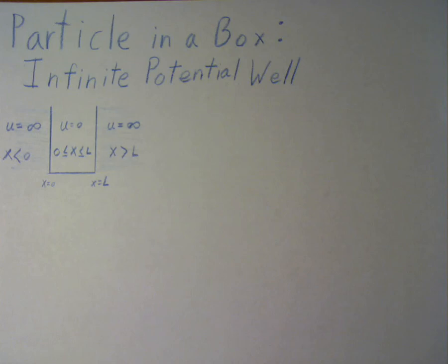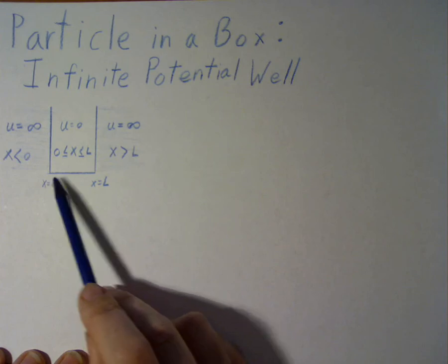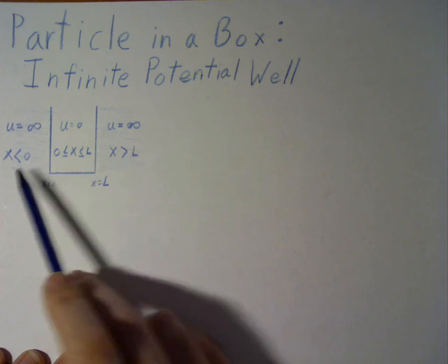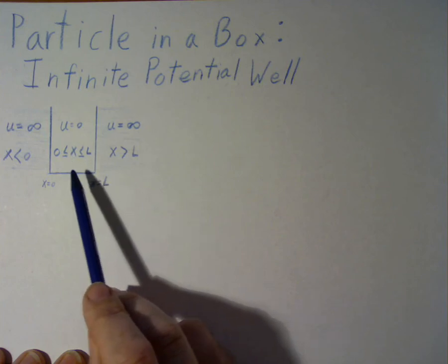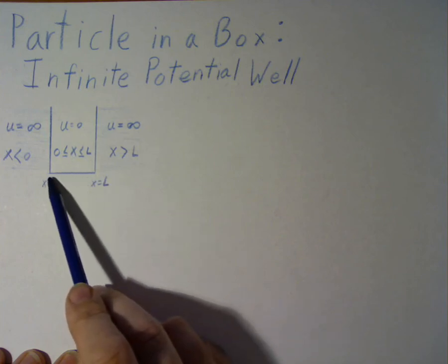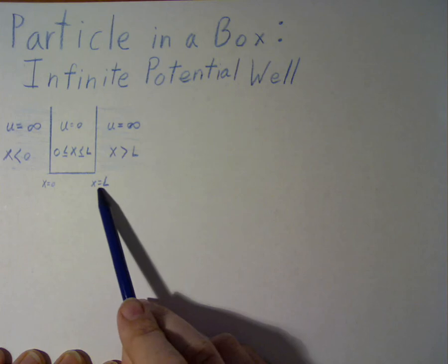One of the first and elementary problems in quantum mechanics is known as the particle in a box, or the infinite potential well. In this problem, we have a potential that is zero between two boundaries and infinite otherwise. This means the entire wave function must be entirely between x equals zero and x equals L.